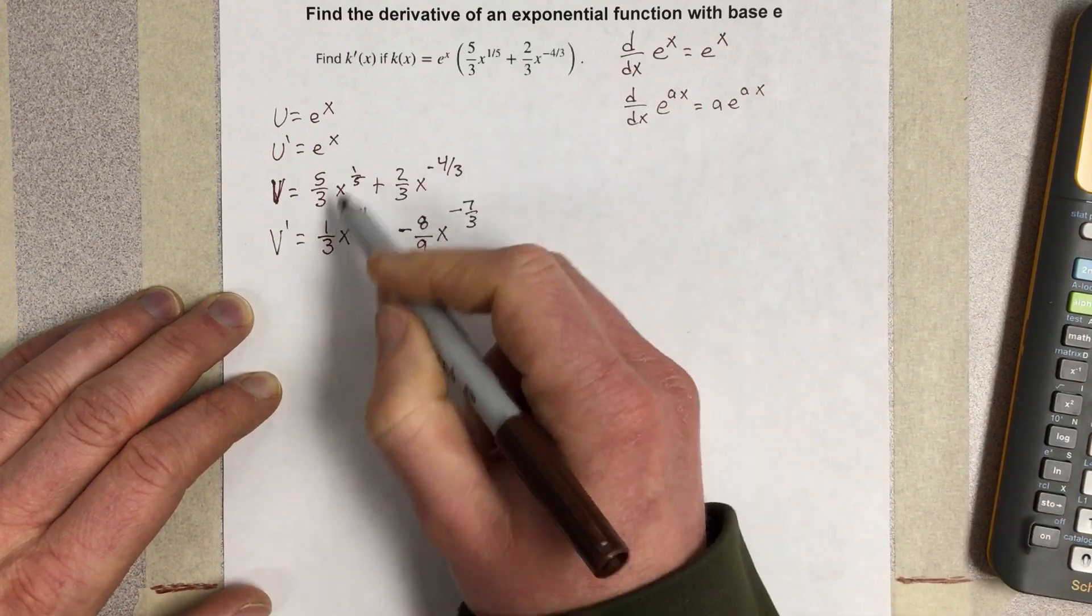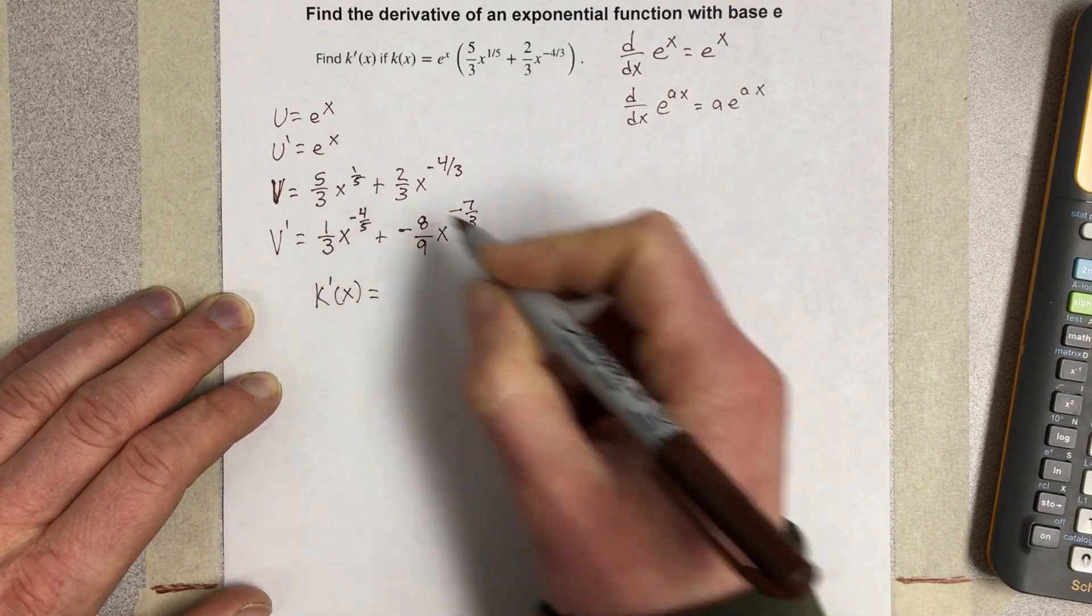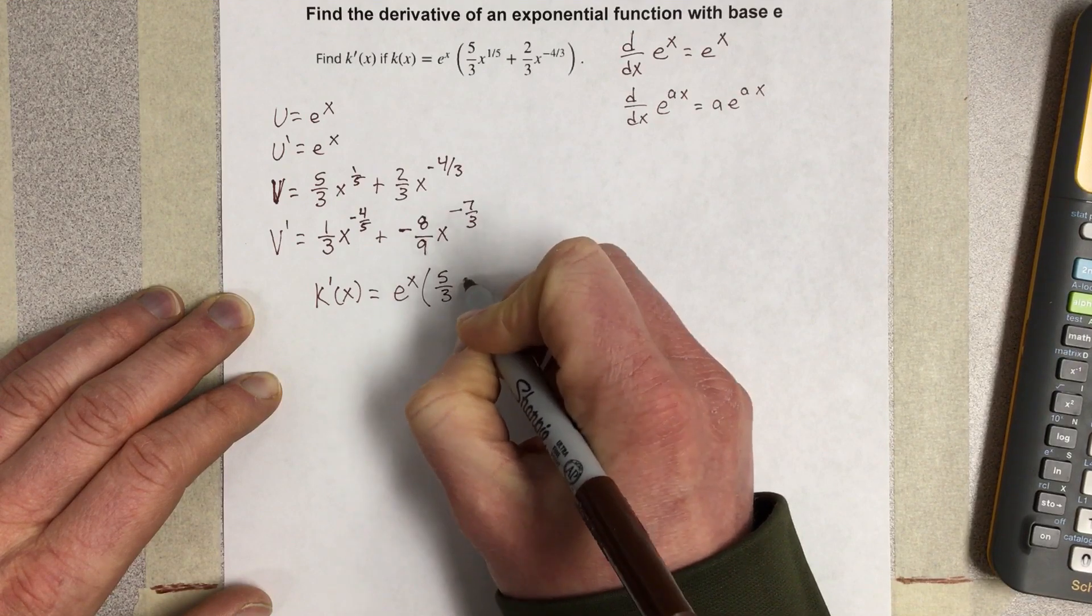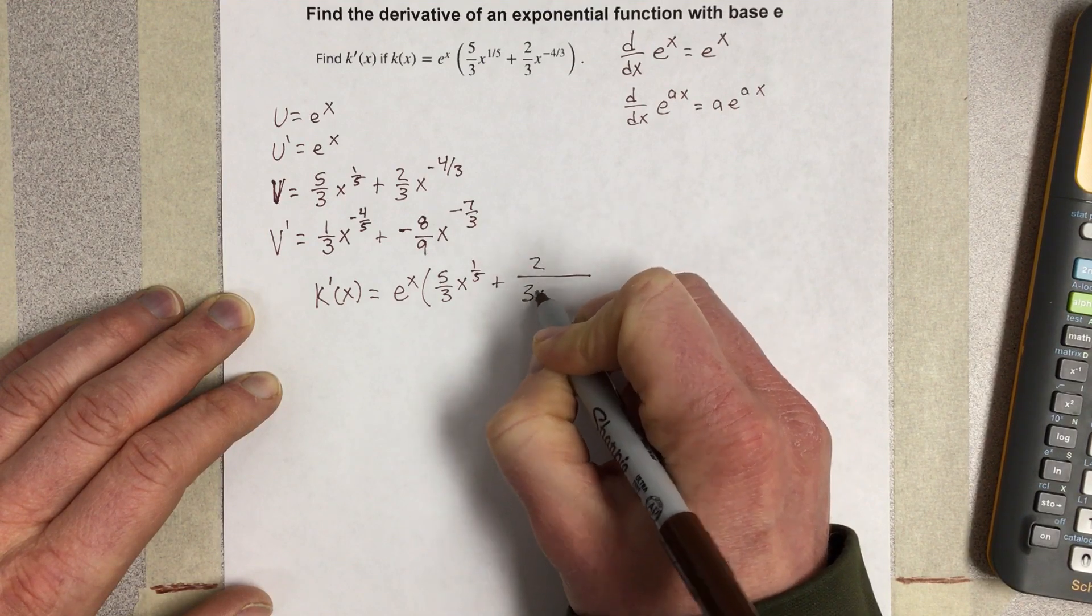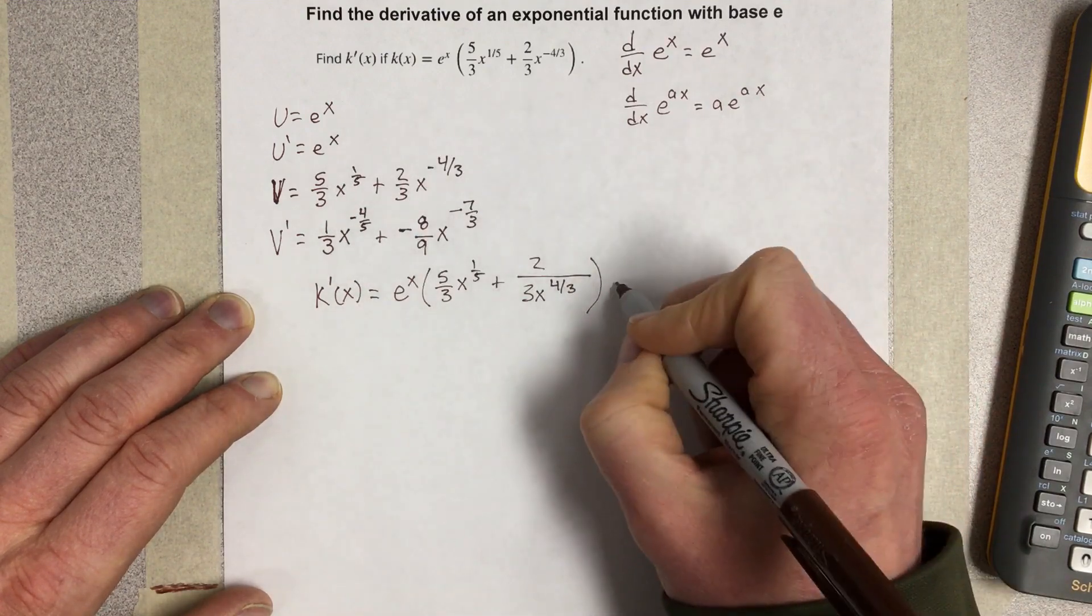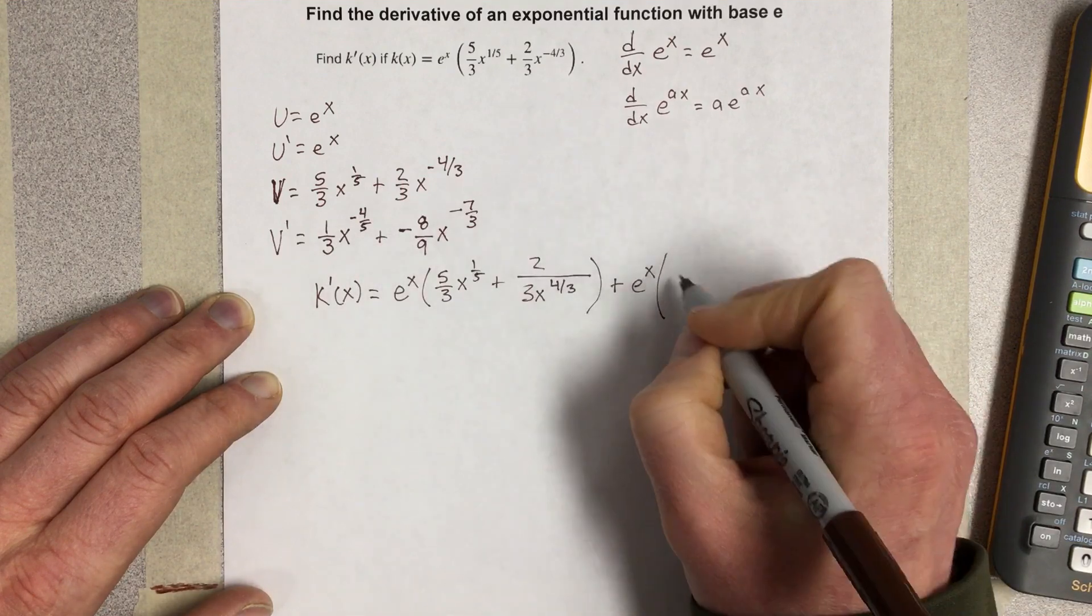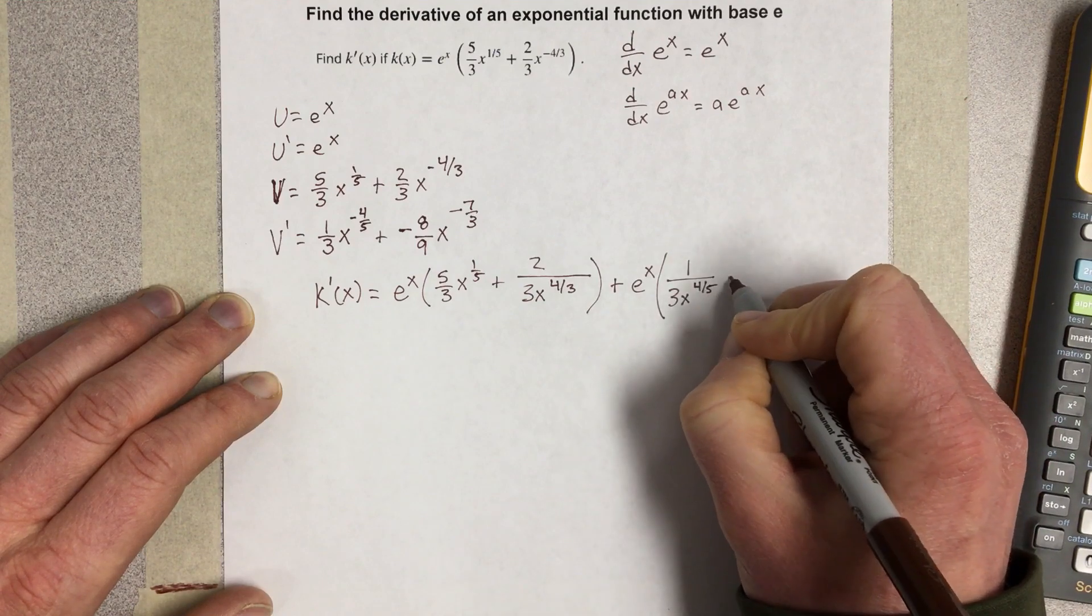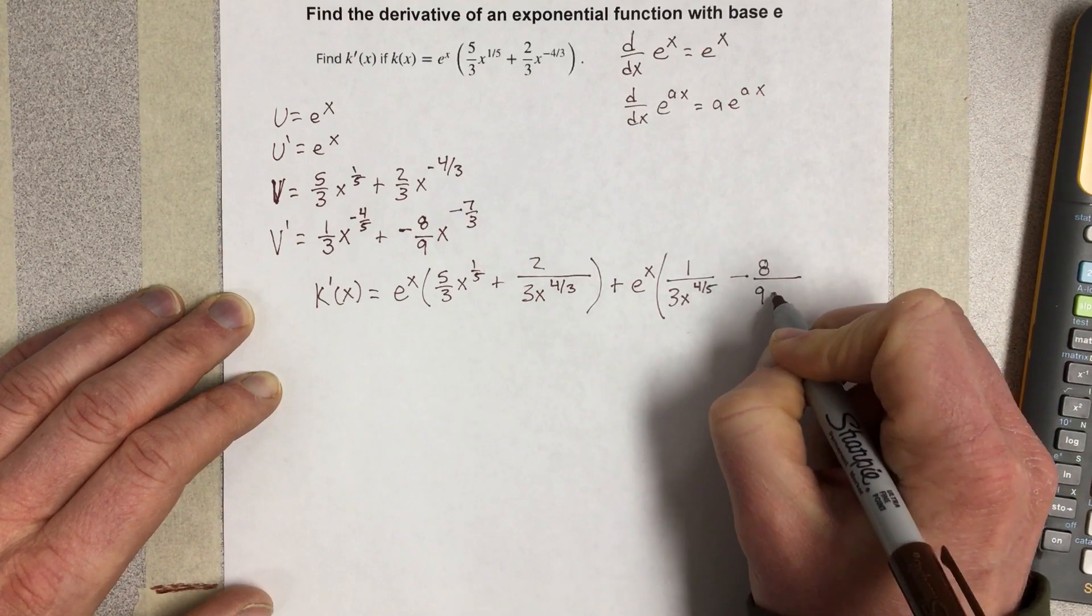So k prime of x is equal to e to the x times five thirds x to the one fifth plus two over three x to the negative four thirds, plus e to the x times one over three x to the negative four fifths minus eight over nine x to the negative seven thirds.